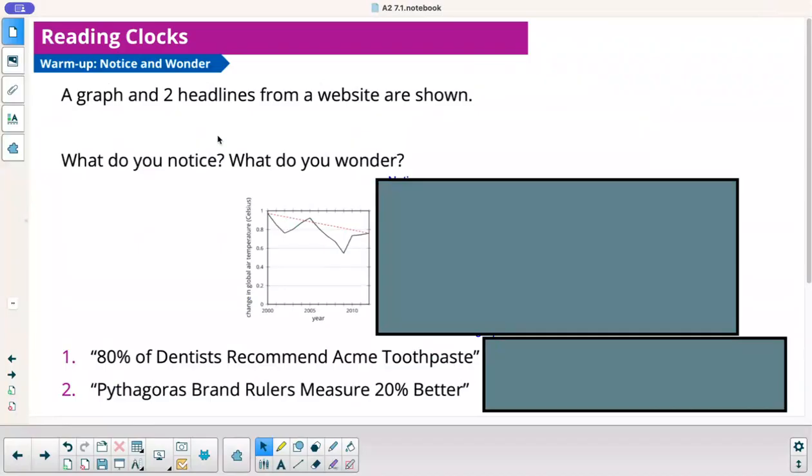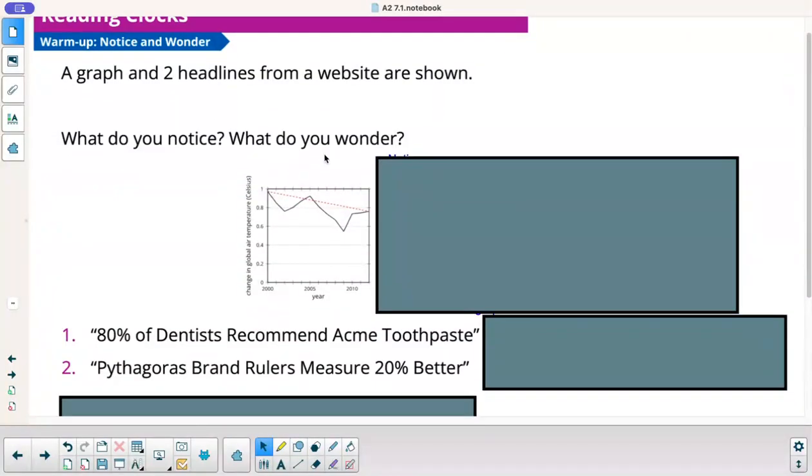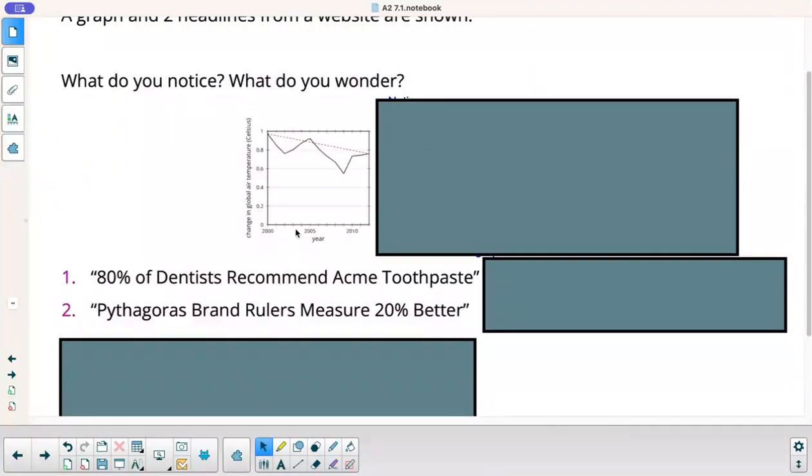All right, so our warm-up. A graph and two headlines from a website are shown. What do you notice? What do you wonder? Pause the video. Take a look. All right, so here's my graph. A couple things that I noticed before I show you what I wrote. It goes from a period of 2000 up to 2012. I noticed that the red line does not look like a best fit because most of the data is below it.